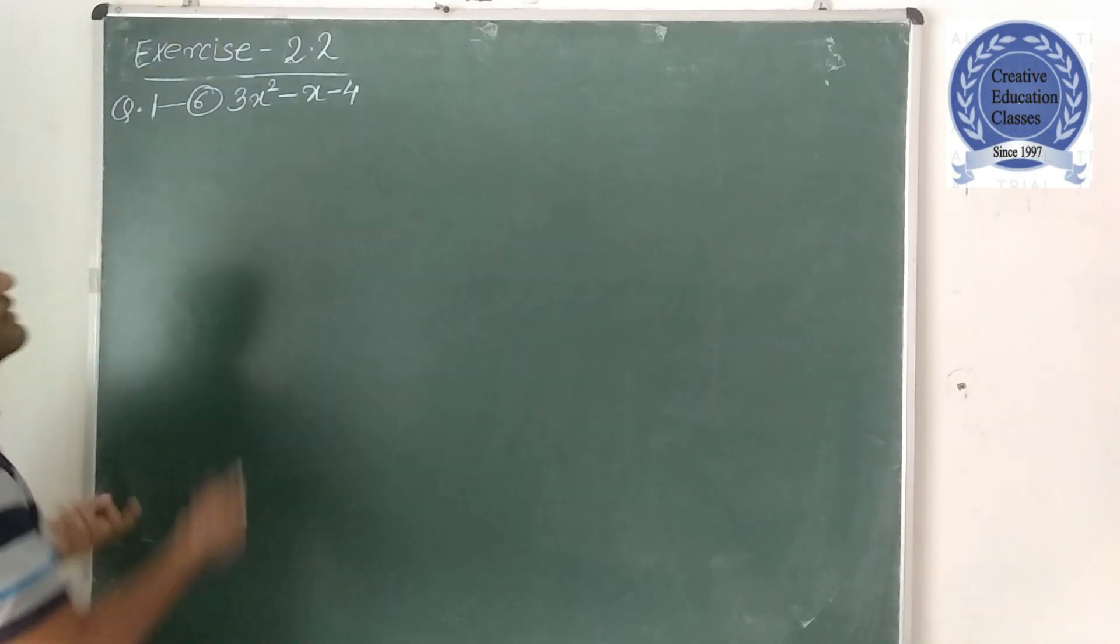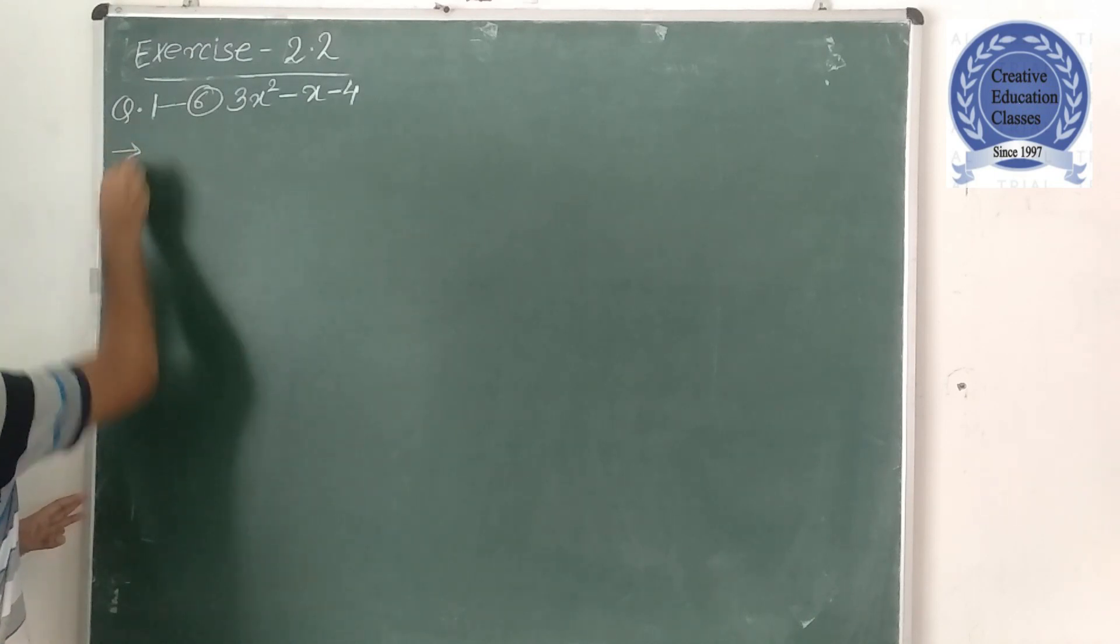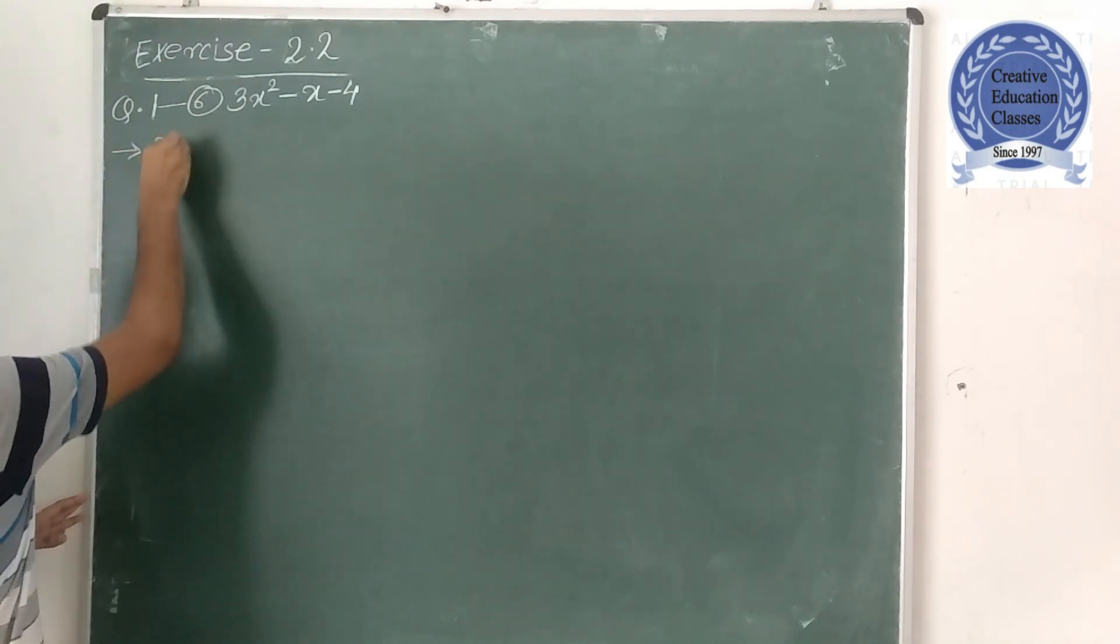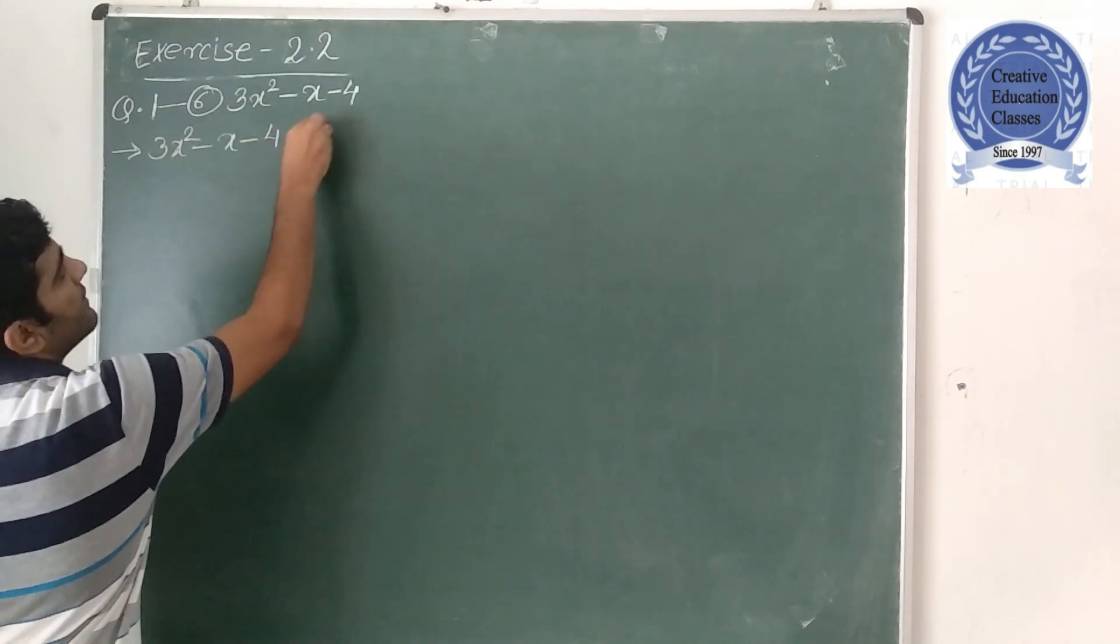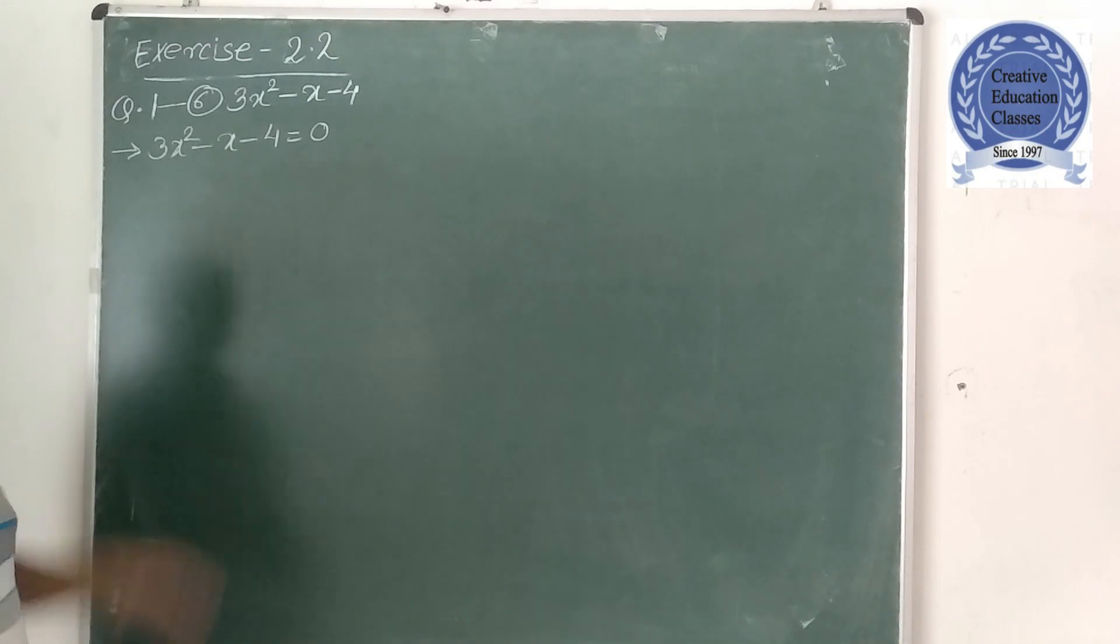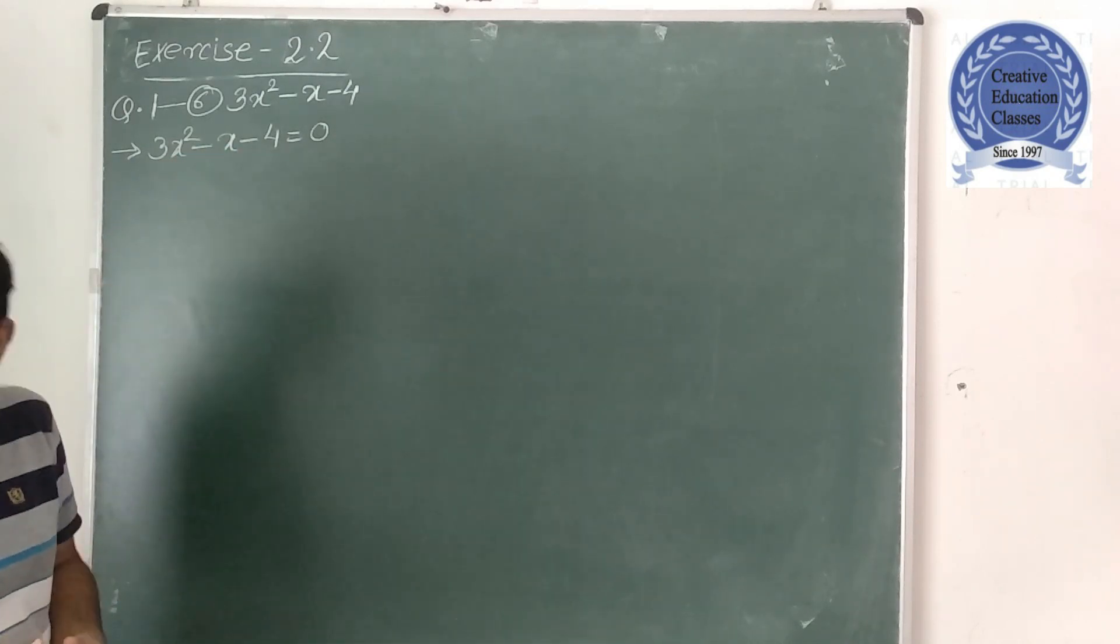So now let us see, this is already given in the standard form. So what I will do, 3x square minus x minus 4 is equal to 0. I will rewrite this into the standard form. Now multiply first and last number to factorize it.